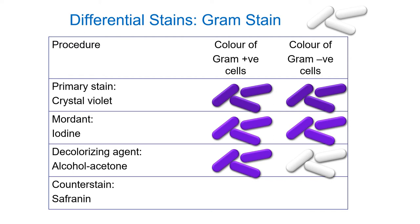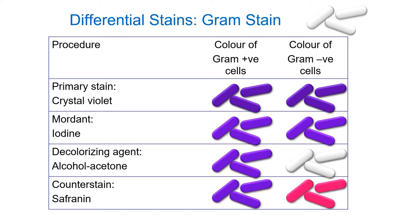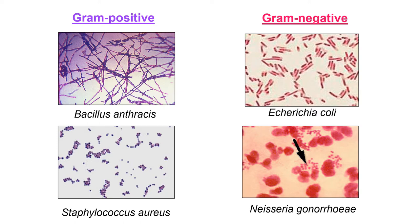We add a counterstain — safranin — that enters into the cells and stains the interior pink. It also binds to gram-positive cells, but the crystal violet is so dark and intense that it overpowers the pink safranin. So after the procedure is complete, gram-positive cells appear purple or blue, and gram-negative cells appear pink.